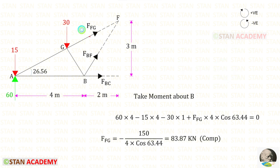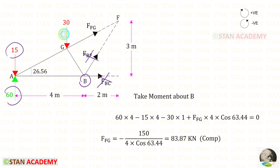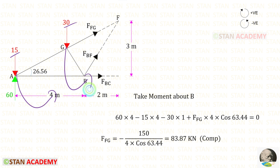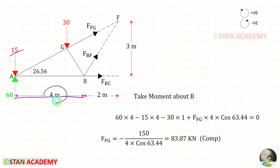To find FFG easily, we take the moment about B. When taking moment about B, we do not consider FBC and FBF. The remaining forces are 15, 60, 30, and FFG. 60 is acting in the clockwise direction, so it is positive, with distance 4 — giving 60 × 4. The two loads 15 and 30 are acting in the anticlockwise direction, so both are negative. For 15, the distance is 4; for 30, the distance is 1.